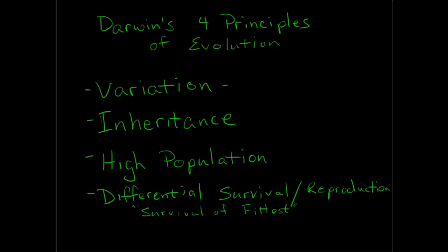The second one is inheritance, and that's simply that traits are passed from parents to offspring and characteristics are passed along from generation to generation. So you might have your father's hair or your mother's eye color or something like that. Because of that, in our example, the black moths in general produced offspring that were also black.